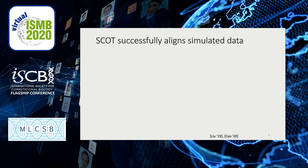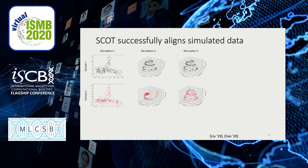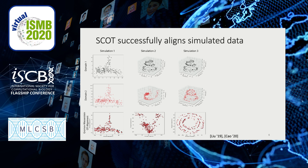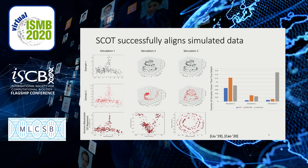We first tried this out on simulated data. We have three simulated datasets: a bifurcation, a Swiss roll, and a circular frustum. Because this is simulated, we have nice one-to-one correspondences to check, so we have a metric that measures how good the alignment is — the closer to zero, the better. We compare against MMDMA and UnionCom, and find that our method, SCOT, outperformed both methods on all the simulated data.